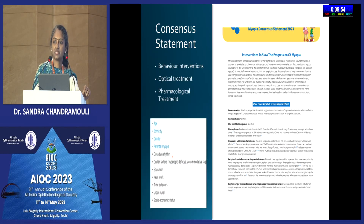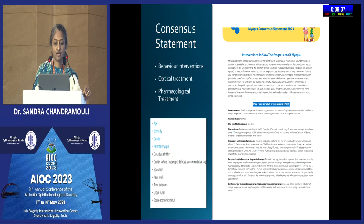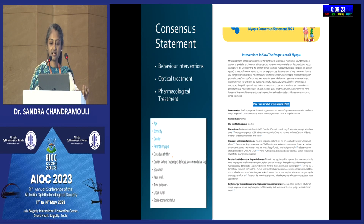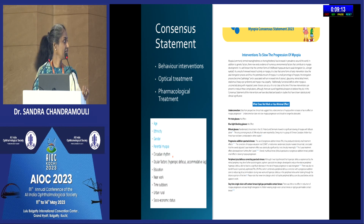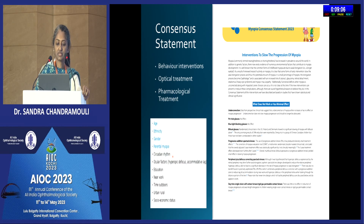We should always follow the 20-20-20 rule when using gadgets. The WCPOS consensus statement outlines behavioral interventions, optical treatment, and pharmacological interventions proven to have an effect on myopia control. Blue light blocking glasses are noted not to have much effect. Myopia is multifactorial, with main factors being age, ethnicity, gender, and parental myopia, plus several minor factors including circadian rhythm, ocular factors, education, near work, time outdoors, and rural versus urban environment.